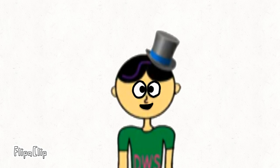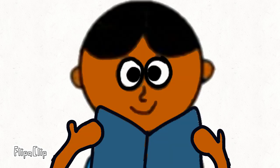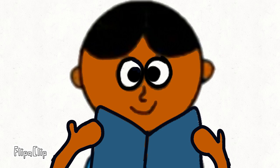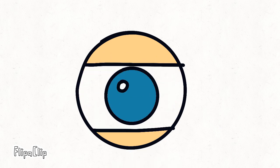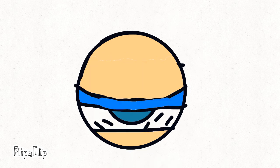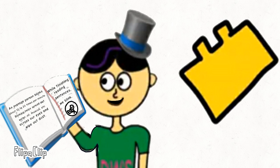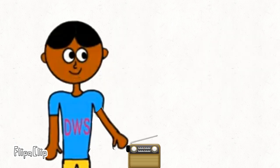Did you know why we blink? An average person blinks about 10 to 20 times per minute. Blinking helps spread water, oil, mucus, etc. across our eyes and wipe out dust. While finishing reading sentences, we blink. When we pause music and sounds, we also blink.